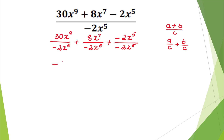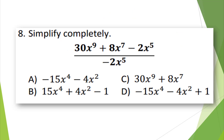30 divided by negative 2 is negative 15, and x to the 9 minus 5 is x to the 4th, giving negative 15x to the 4th. 8 divided by negative 2 is negative 4, x to the 7th minus 5 is x squared, giving negative 4x squared. Negative 2x to the 5th over negative 2x to the 5th equals positive 1. The correct answer is D.